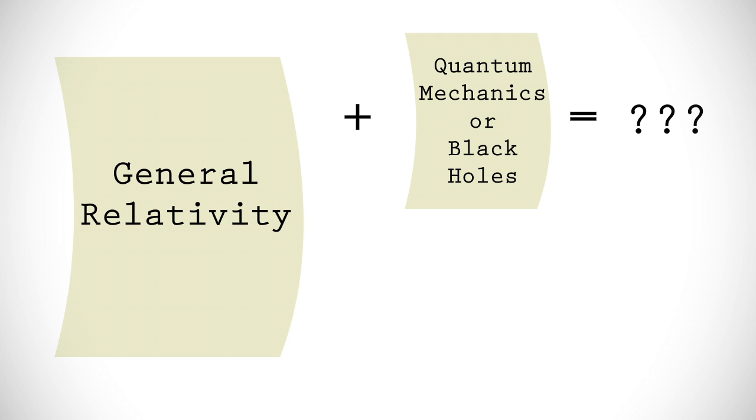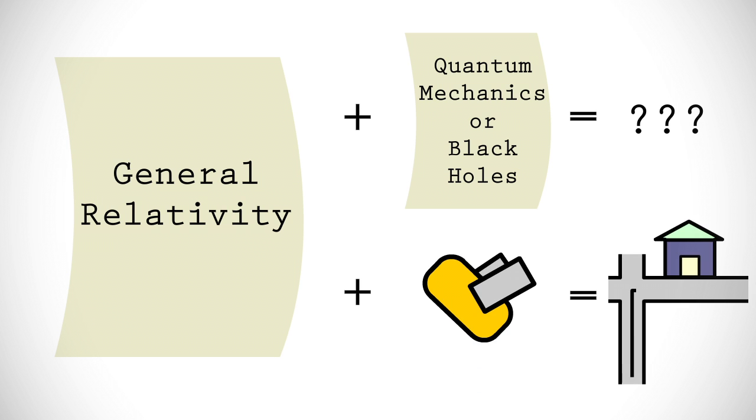General relativity isn't perfect, but it has held up against tremendous scrutiny and accurately makes predictions needed to live our modern lives. But keep in mind, it's just theory.